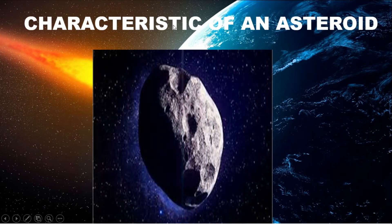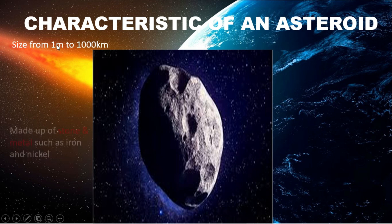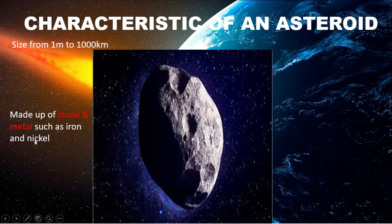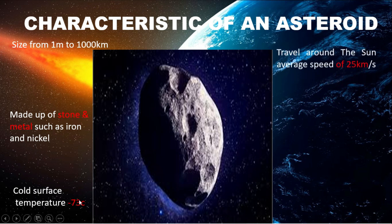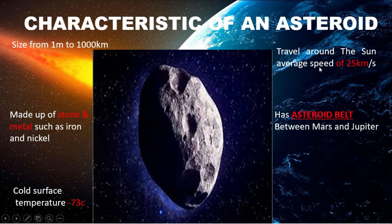What are the characteristics of an asteroid? This is the diagram of an asteroid. The first one is sized from 1 meter to 1,000 kilometers. Second, it is made up of stone and metal such as iron and nickel. It also has a cold surface which is negative 73 degrees Celsius. Asteroids travel around the sun at an average speed of 25 km per second, and there is also an asteroid belt